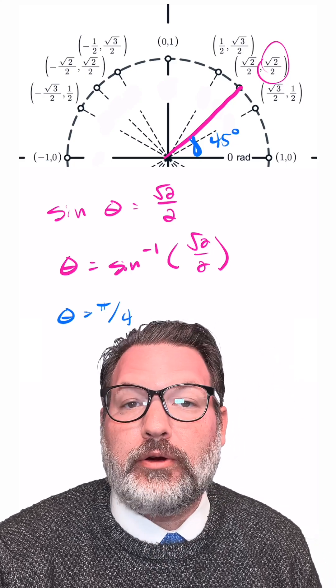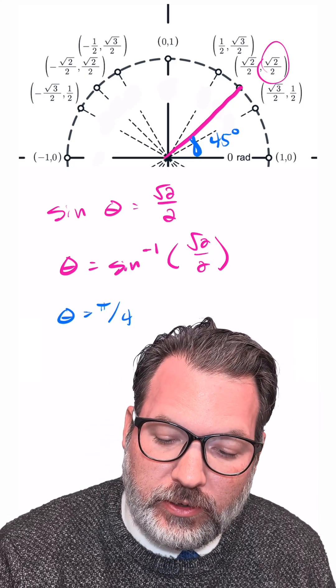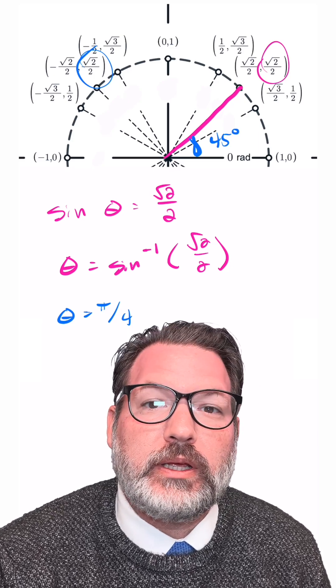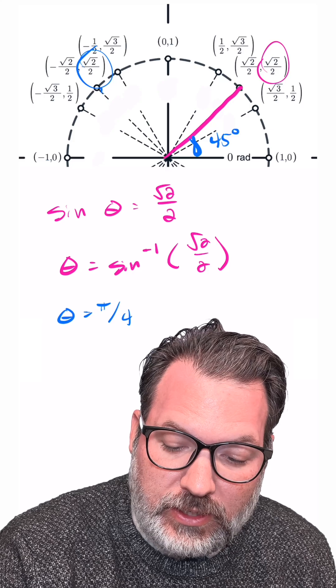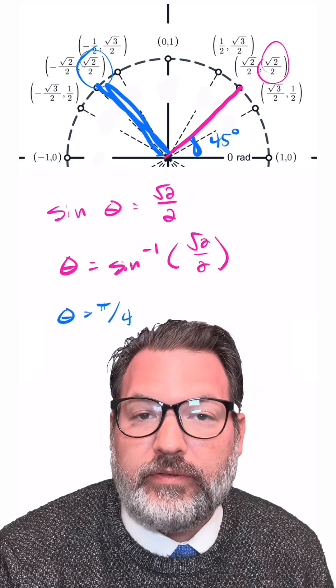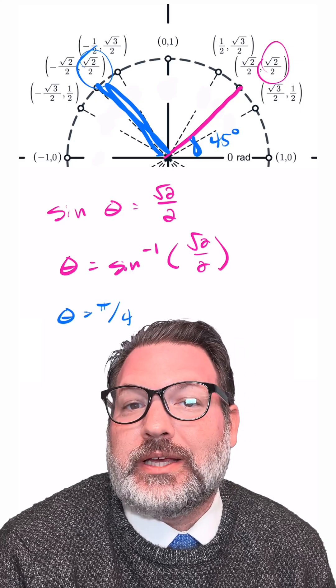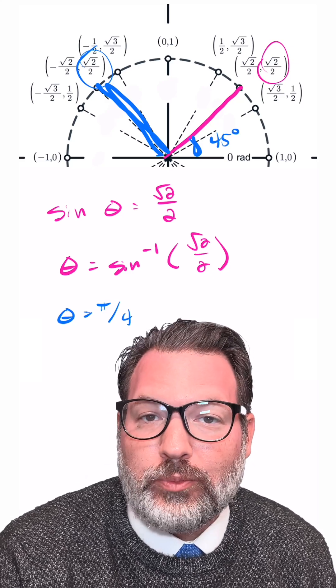Theta here is equal to pi over 4. One thing you might notice here is, wait, isn't there another place on the unit circle where the y-coordinate is also root 2 over 2? And the answer is yes, there is. In fact, with an angle of 3 pi over 4, or 135 degrees, when you take the sine, you would also get back that same root 2 over 2.